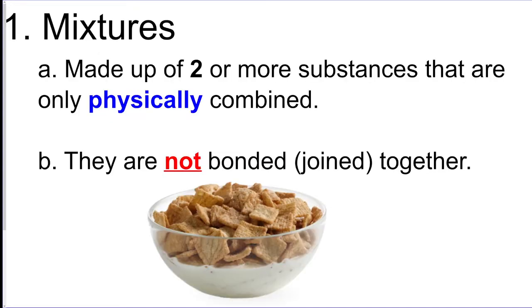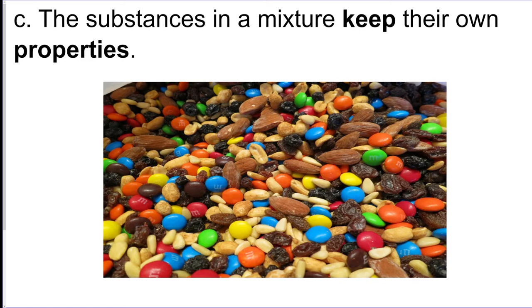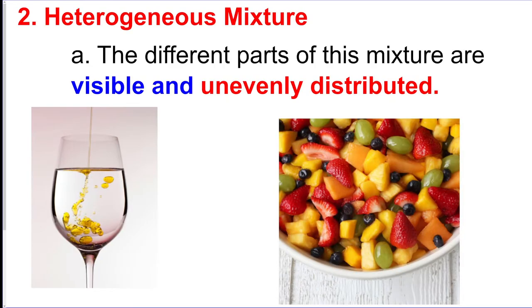The key thing about a mixture is they are not bonded together in any way. Some examples: oatmeal and raisins — the raisins don't turn into oatmeal when you mix them together, or vice versa. They keep their same properties; they're just in a pile together essentially. Now there are two different types of mixtures.